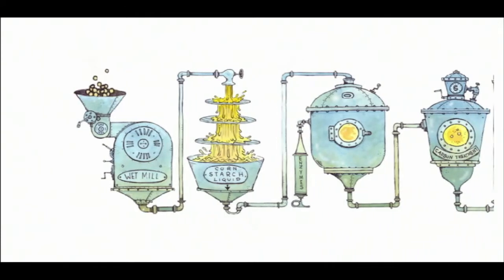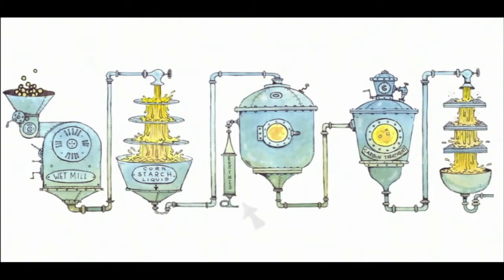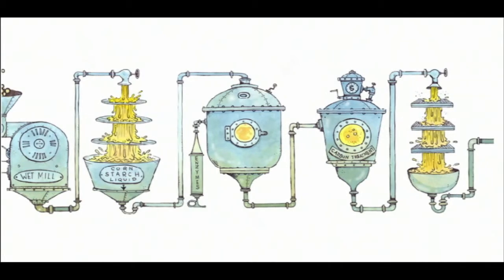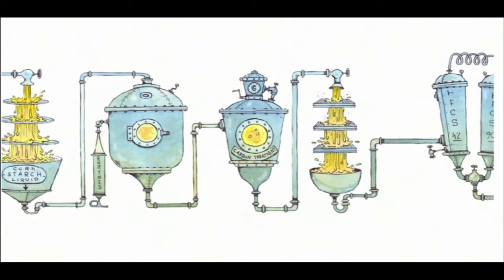After being separated, natural enzymes are added to the liquid, which converts some of the sugars in the liquid from glucose to fructose. The resulting liquid is typically 42% fructose and 58% glucose.